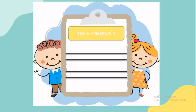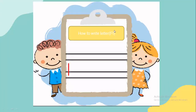I will talk about how to write letter F. This is letter F. How to write capital F: make a down stick, a sleepy line, and a sleepy line. This is a capital F.